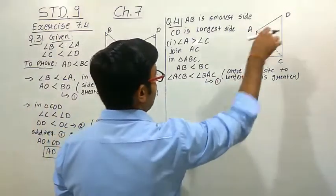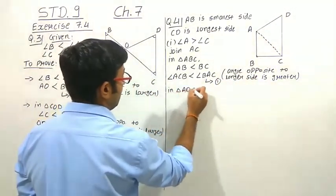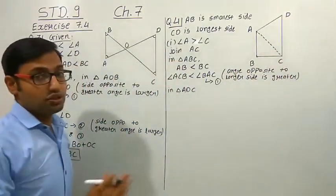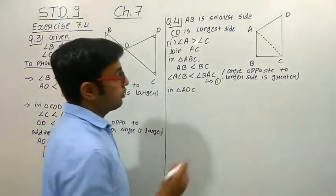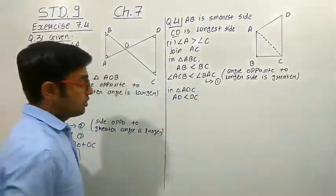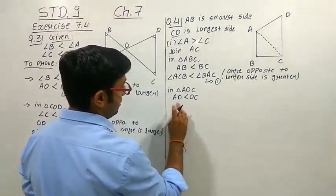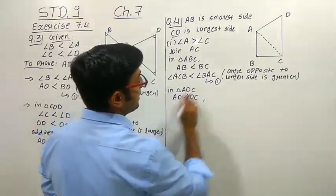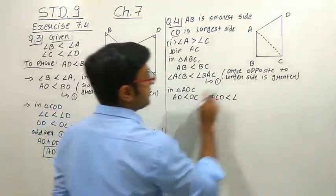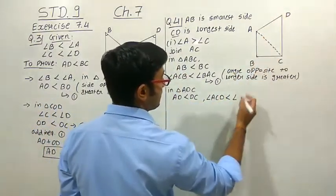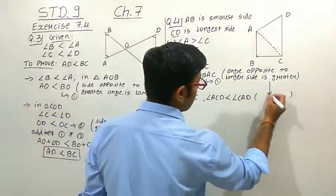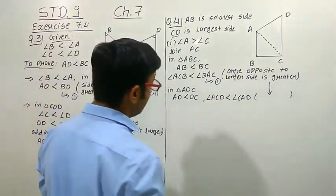In the same way, consider triangle ADC. CD is the longest side out of all four sides. So AD is less than DC. The angle opposite to AD is angle ACD, and the angle opposite to DC is angle CAD. Therefore angle ACD is less than angle CAD. Give it inequality number 2. Reason: angle opposite to longer side is greater.